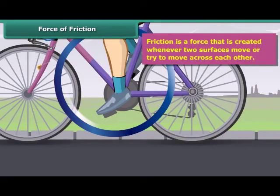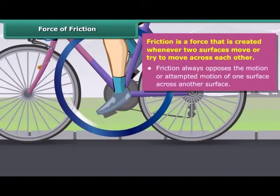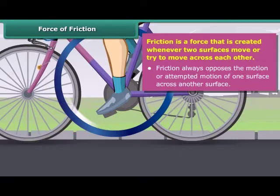Friction is a force that is created whenever two surfaces move or try to move across each other. Friction always opposes the motion or attempted motion of one surface across another surface. The force which resists the motion of a body while moving on a surface is called friction.